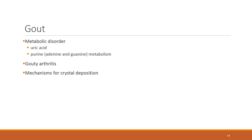Gout is a metabolic and connective tissue disorder — an impairment of uric acid production or excretion. High levels of uric acid are found in the blood. When concentration is high enough, uric acid can crystallize, and the deposits form in connective tissues. When this occurs in joints and synovial fluid, it leads to inflammation known as gouty arthritis.